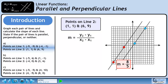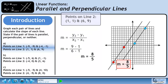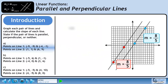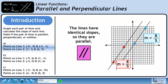Now we'll calculate the slope using the slope formula. Plug the numbers into the formula. The slope is 8 over 5. The lines have identical slopes, so they are parallel. We can represent parallel lines with the purple icon shown.